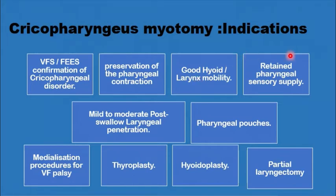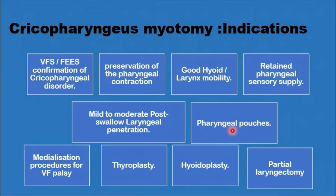The sensory supply of the pharynx should also be confirmed to be present. As a secondary procedure, cricopharyngeal myotomy can help mild to moderate aspiration. In pharyngeal pouches, myotomy is an integral part of management along with excision or suspension of the pouch. It can also be combined with medialization procedures in cases of recurrent laryngeal nerve palsy, pharyngoplasties, hyoidoplasties, and partial laryngectomies.